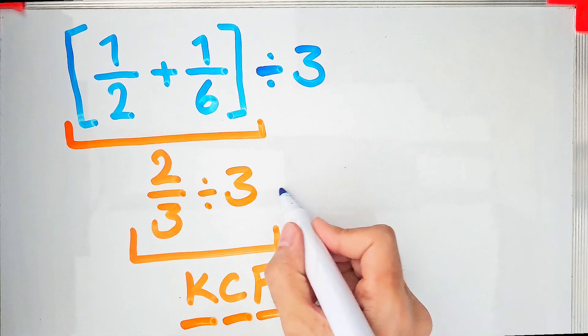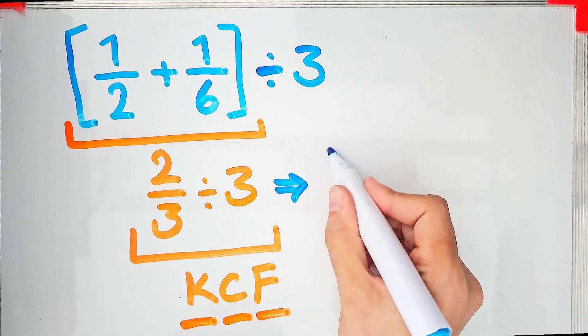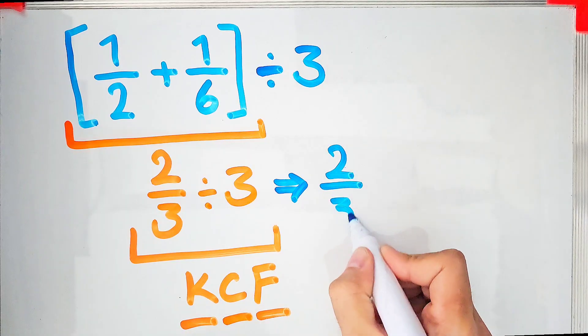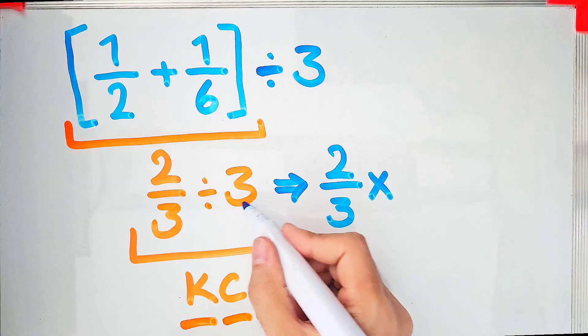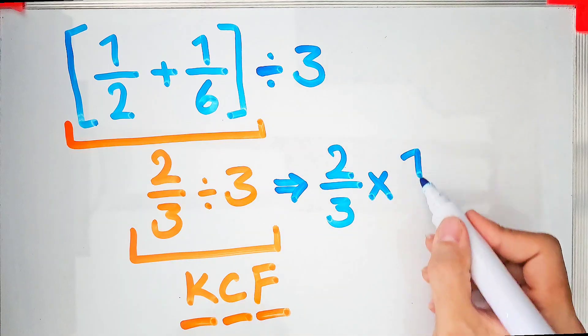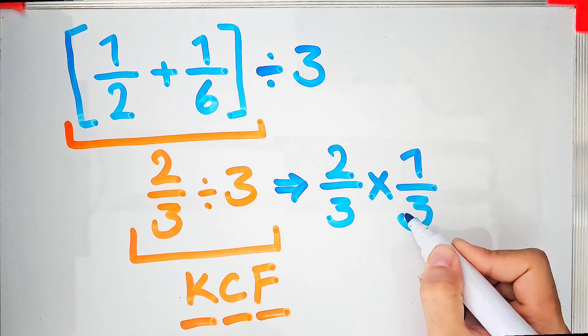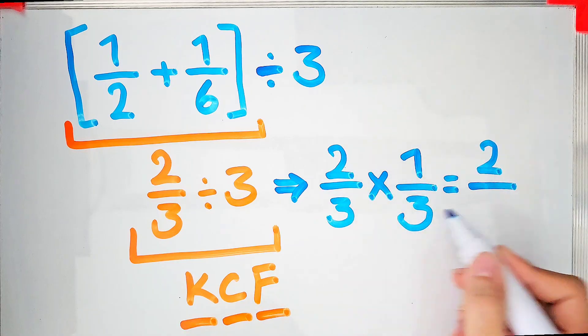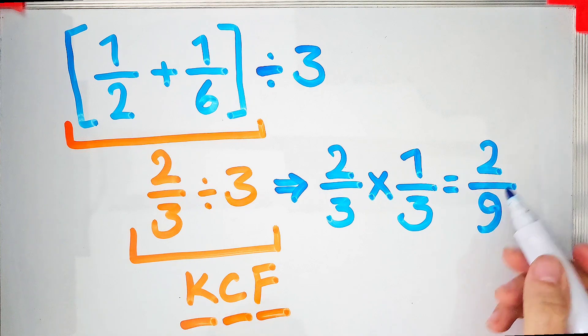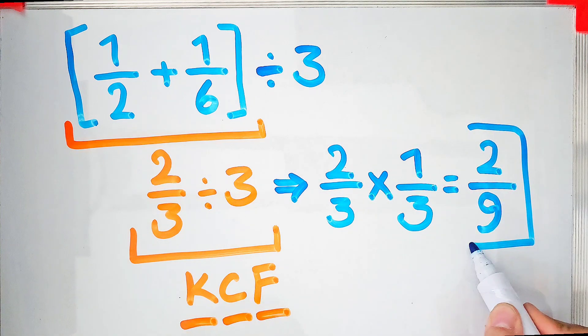After that we flip the second number. Now we can do multiplication and get the final answer. 2×1=2 and 3×3=9. We get the final answer of this question. Thank you guys for watching, please subscribe to the channel and leave a comment. Goodbye guys.